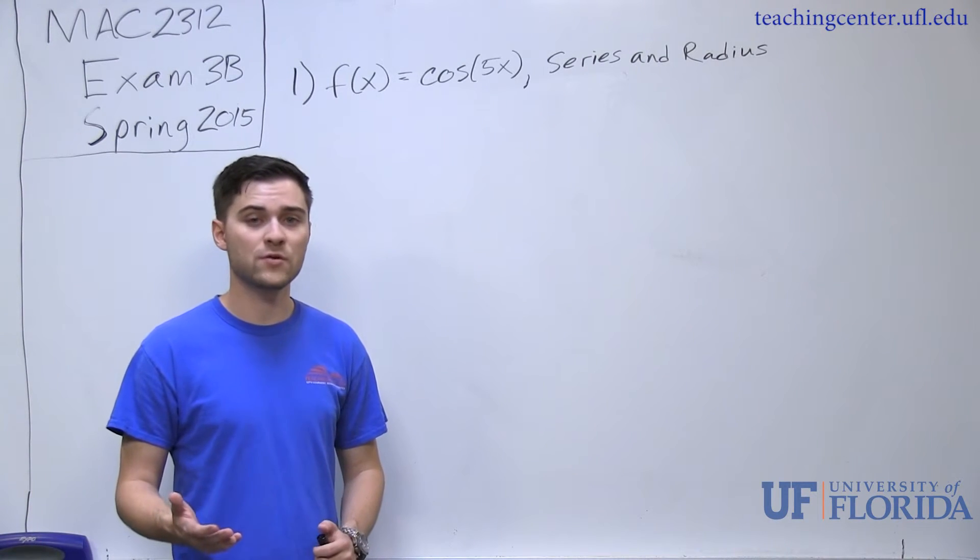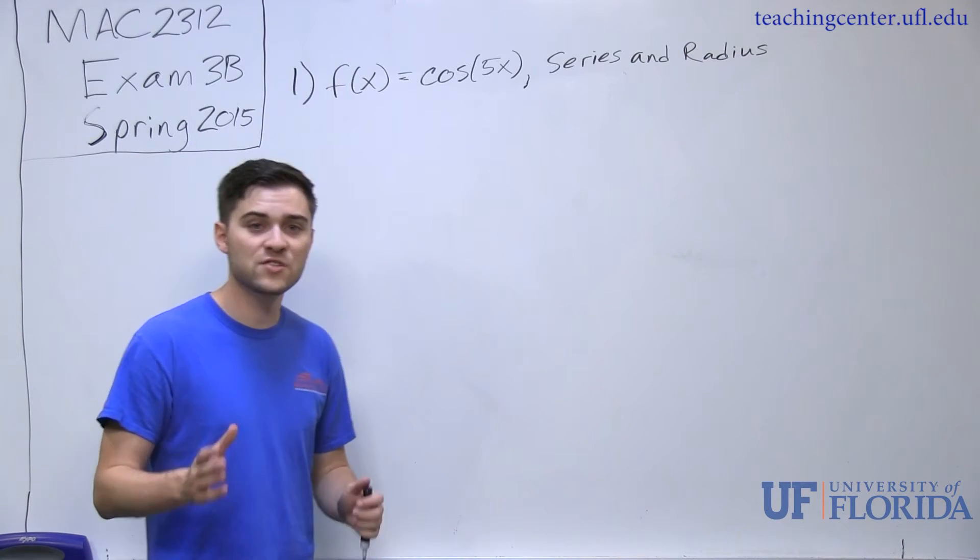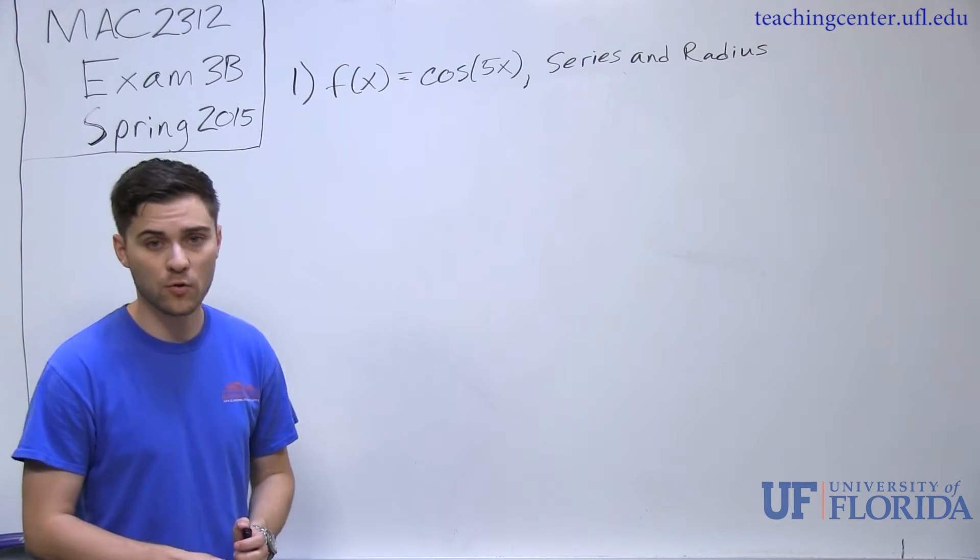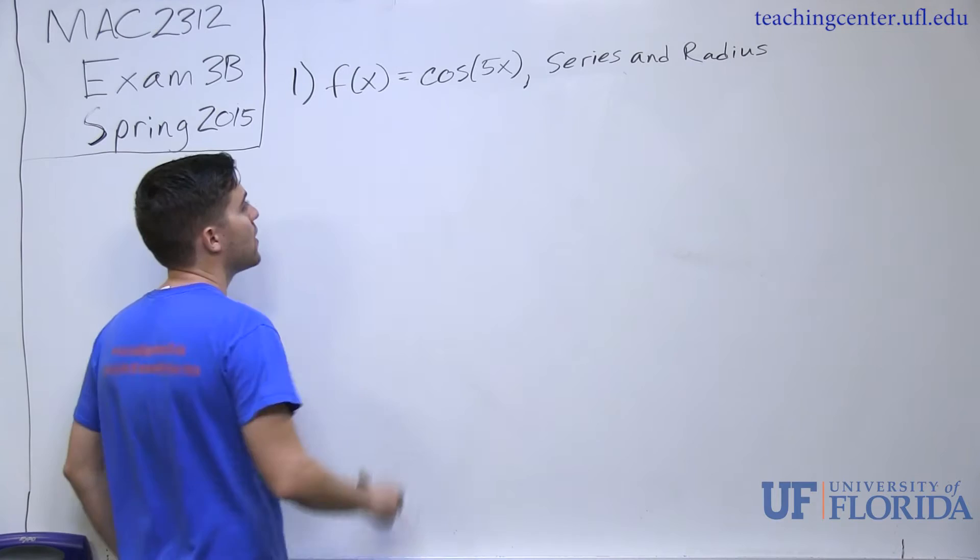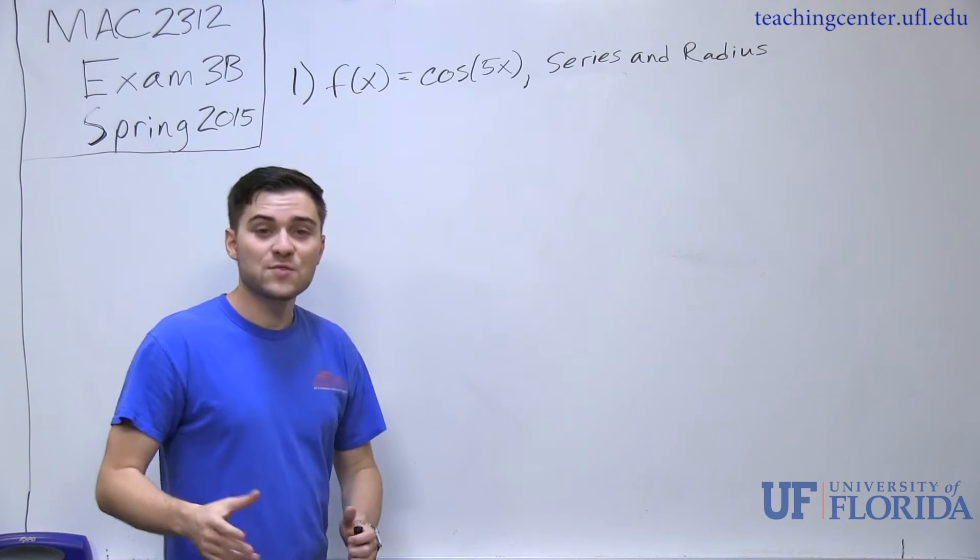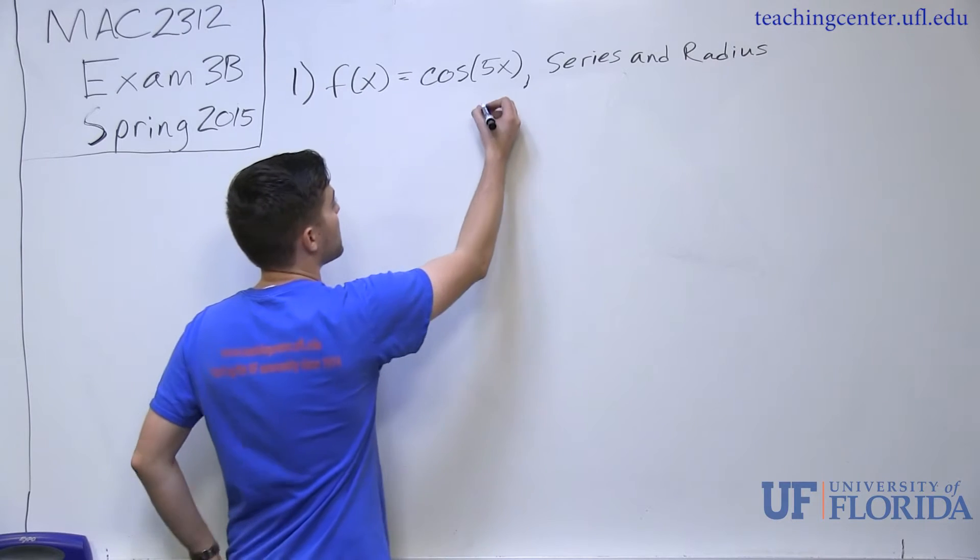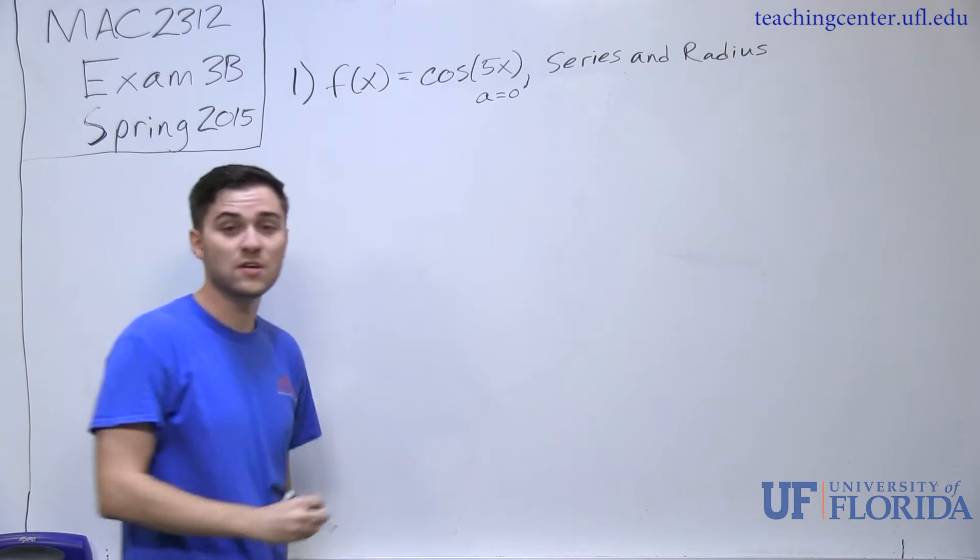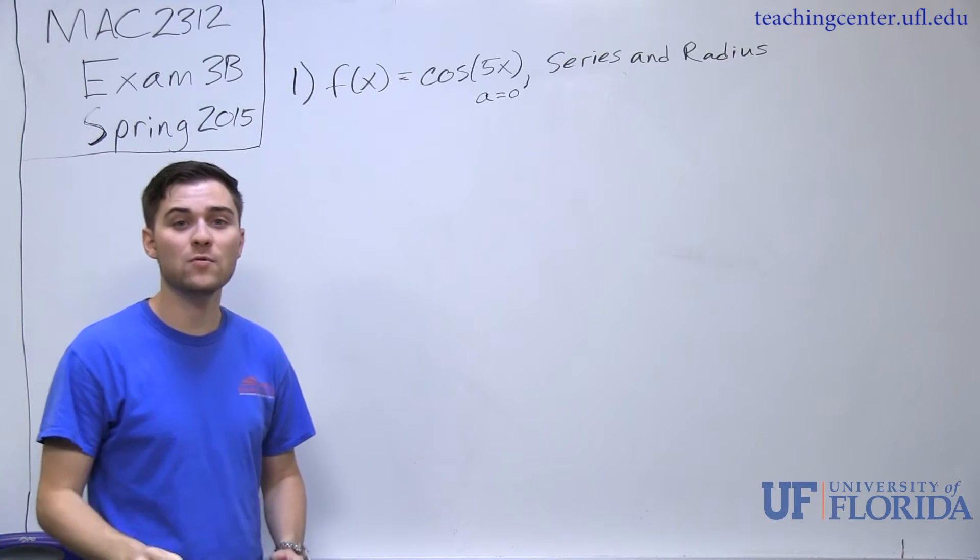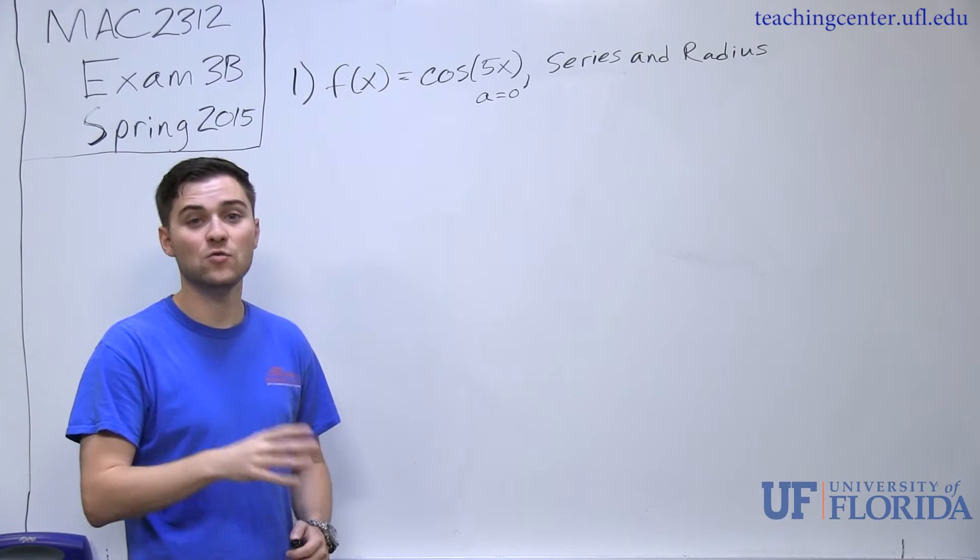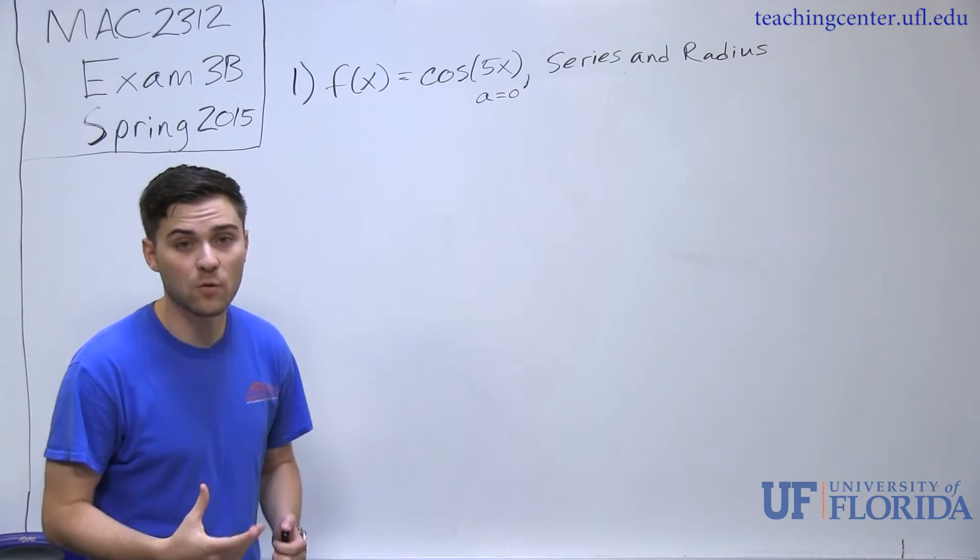Let's say you didn't remember what the Maclaurin series of cosine of x is. Let's go through step by step how to solve for a Maclaurin series expansion. Remember, if it says Maclaurin series, it's automatically assumed that its center is at zero. I'm going to denote that my a is equal to zero in this case, and I need that a value because that's what I have to plug into my derivatives to get my Taylor coefficients.